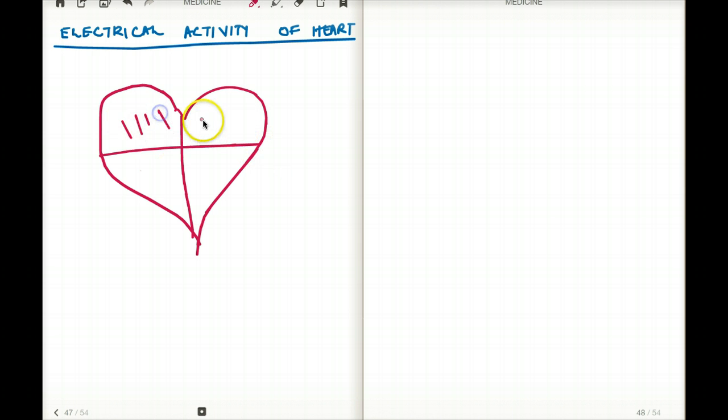Atria needs to contract first, followed by the ventricles. Only then blood from the atria will trickle down to the ventricles and then ventricles will contract, pushing blood out of the heart. Now this kind of synchronized fashion is achieved by a very sophisticated conduction system that we have in our heart.